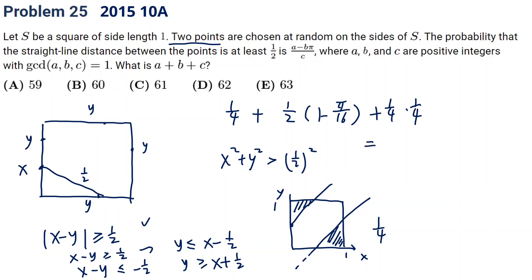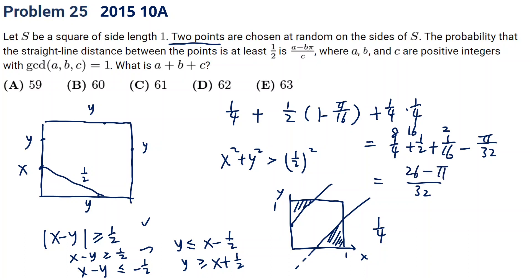Finishing the calculation: one-fourth plus one-half times (one minus pi over 16) plus one-sixteenth. Converting everything to thirty-seconds: 8 over 32 plus 16 over 32 plus 2 over 32, minus pi over 32. The total numerator is 26 minus pi, giving the answer (26 minus pi) over 32.